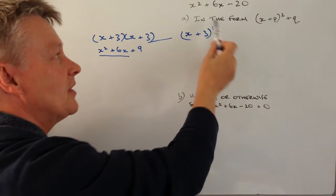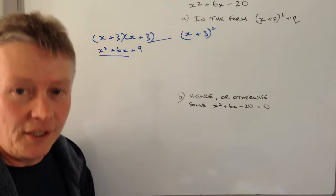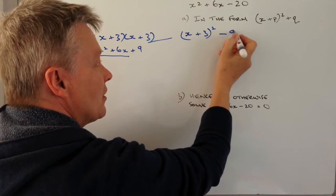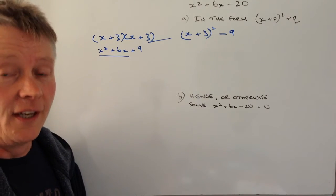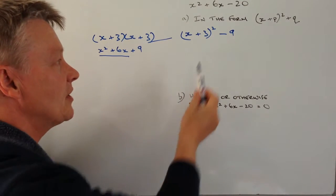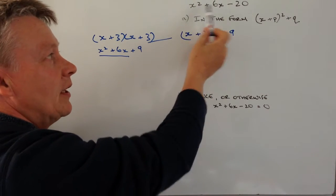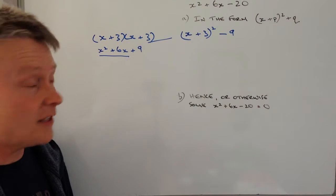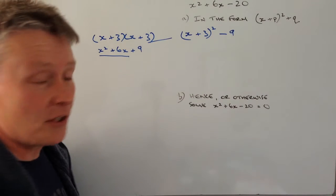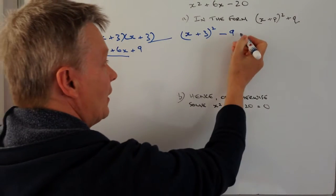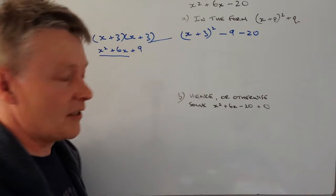So if we're going to make this in the same form, we're not going to change the equation but we need to get rid of this 9, so we minus 9 at that point. In other words, if we factorize this out and multiply that, we're going to get x² + 6x. However, we've also got this -20, so I need to take that into account as well. So I'm going to minus 20 at that side.